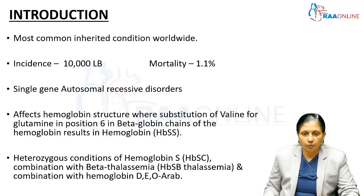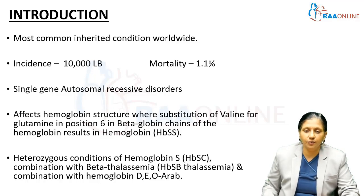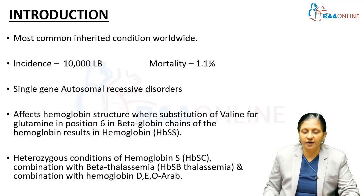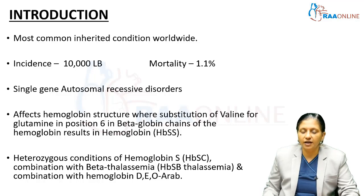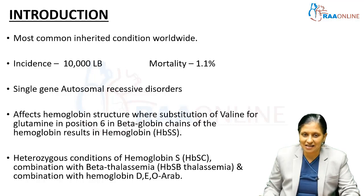It affects hemoglobin structure, where there is a substitution of valine for glutamine at position 6 in the beta globin chains of hemoglobin. This substitution results in formation of a hemoglobin called hemoglobin SS.